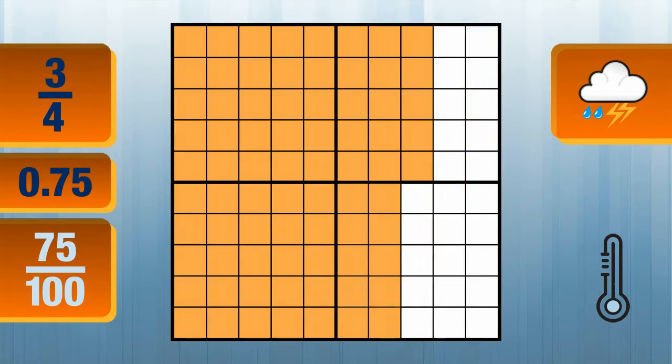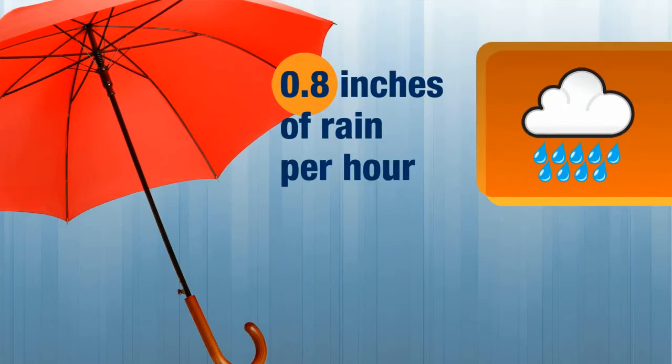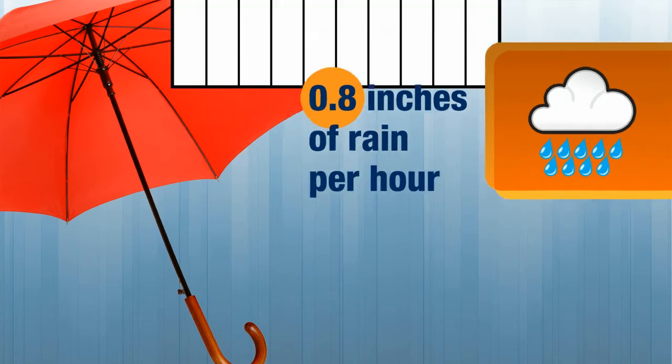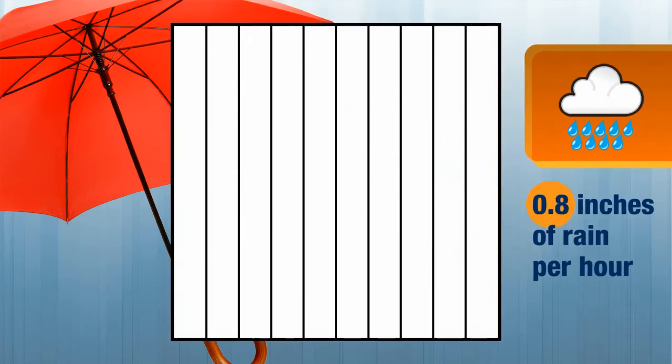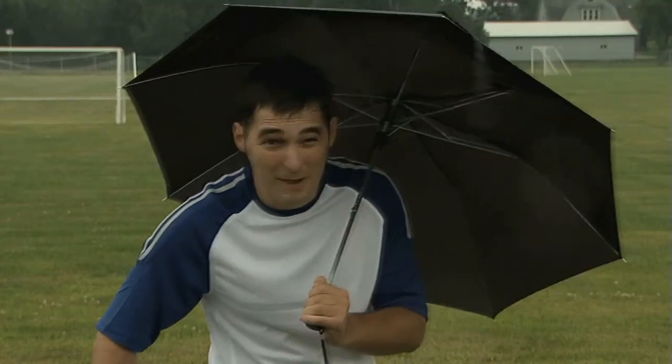75 hundredths is 7 tenths and 5 hundredths. The weatherman says that the airport received .8 inches of rain in one hour. It must have been a downpour. Check this out. Remember what I said about the place value being the denominator for decimals? 8 tenths can be written as 8 tenths. If you use a grid divided into 10 parts, we can shade in 8 columns to represent the rain. I always keep this in mind when I'm working with decimals and fractions to make sure I don't get soaked.